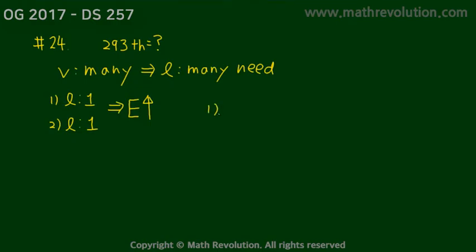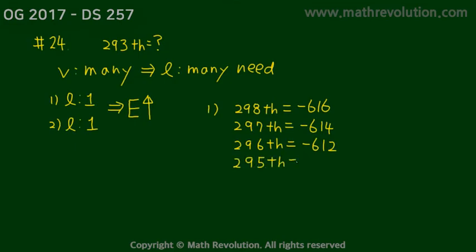In condition 1, we're told what the 298th term is, which is negative 616, and that each preceding term is two more than the current term. So we know that the 297th is negative 614, and then negative 612. The 295th is negative 610. The 294th is negative 608. And finally, the 293rd element is negative 606.